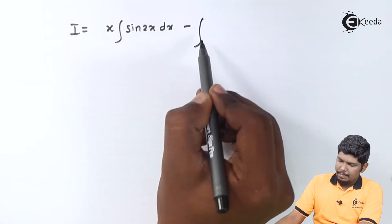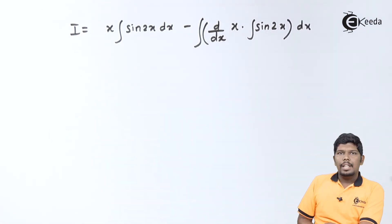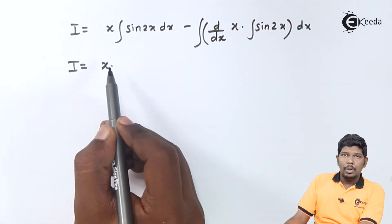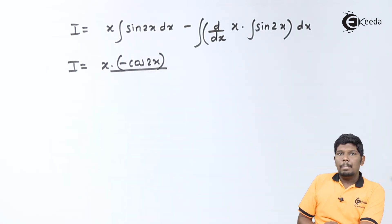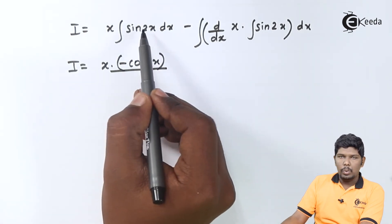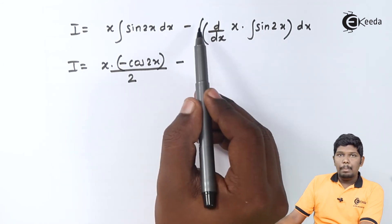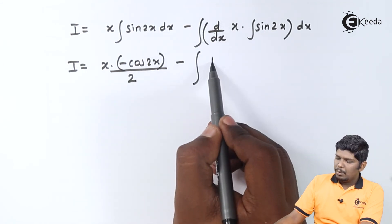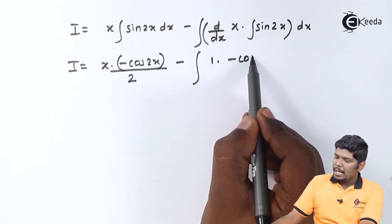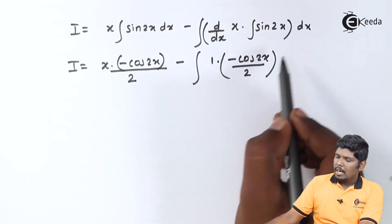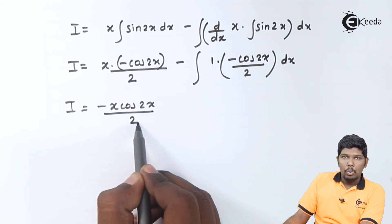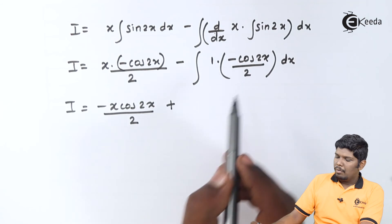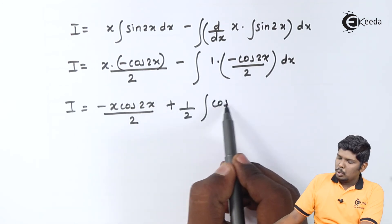Now let us solve further. I equals x into integral of sin2x, which is minus cos2x upon 2, minus — keeping the bigger integration sign — derivative of x is 1, into integral of sin2x, which again gives minus cos2x upon 2, and the outer dx. Further simplifying, we get minus x·cos2x upon 2, and minus into minus gives plus, so we have 1 upon 2 times integral cos2x dx remaining.